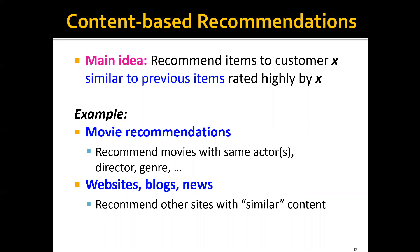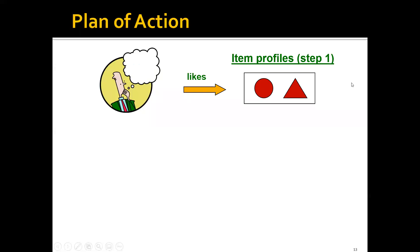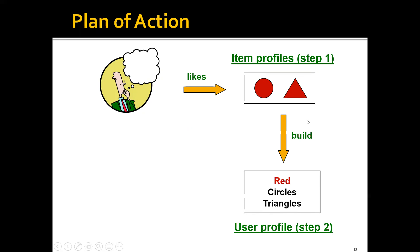We will also recommend other sites with similar content if the items are websites, blogs, or news. So here is the plan of action. Given a user and knowing which items this user likes, the first step is to build item profiles for those items. For example, the first item's profile would be 'red' and 'circle,' and the second item's profile would be 'red' and 'triangle.'